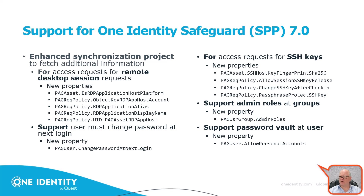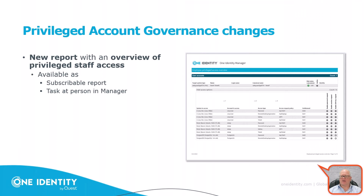Additionally, there is support for admin roles on groups — the PAG user group was extended with a new admin roles property. Supporting different password roles at the user object, a new property 'allow personal accounts' was added. There is also a new report for PAG: the overview of privileged staff access, available as a subscribable report and as a task in the manager. That concludes the connected system modules section.